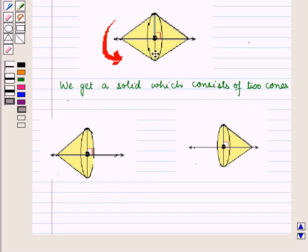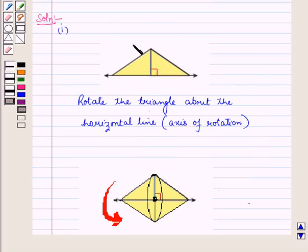One cone is this left cone, and the other cone is this right cone. So when we rotate this triangle about the horizontal axis, we get this figure which consists of two cones.